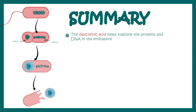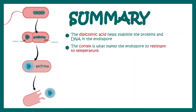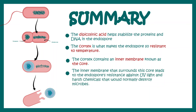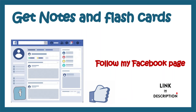In summary, dipicolinic acid helps to stabilize the proteins and DNA inside the endospore, making it very resistant. The cortex makes the endospore resistant to temperature. The inner membrane surrounding the core makes the endospore resistant to UV radiation, which is why UV sterilization does not work for endospores. Many spore-forming bacteria can also cause disease, such as Bacillus anthracis and Clostridium perfringens, among others that cause harmful effects to humans.